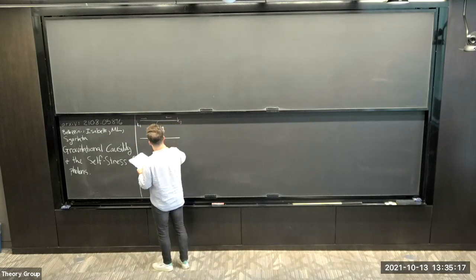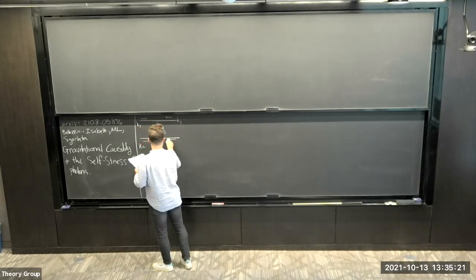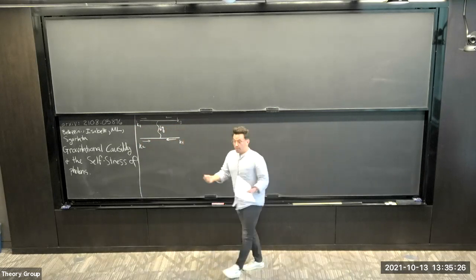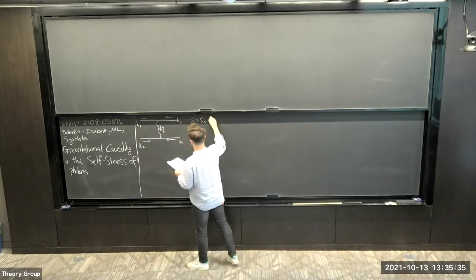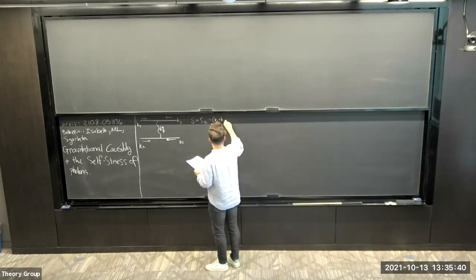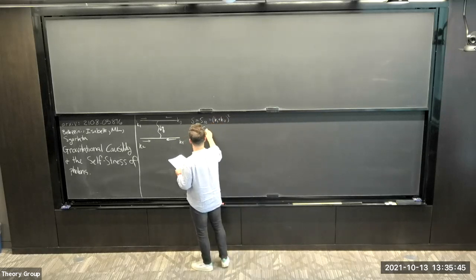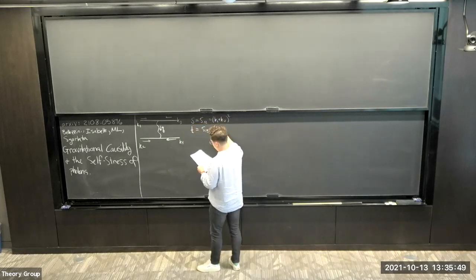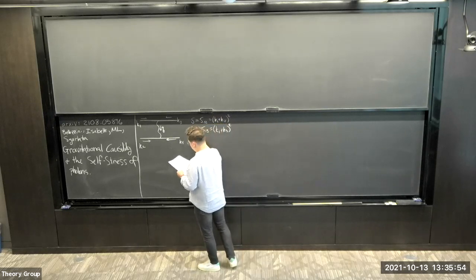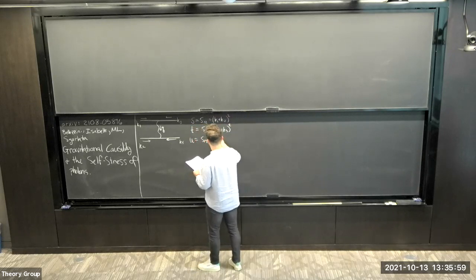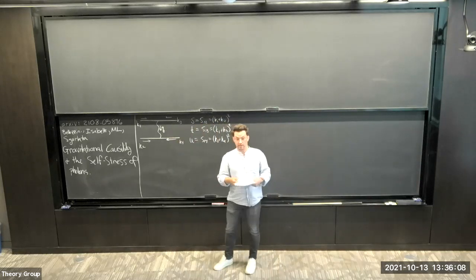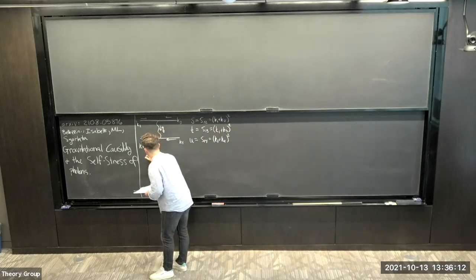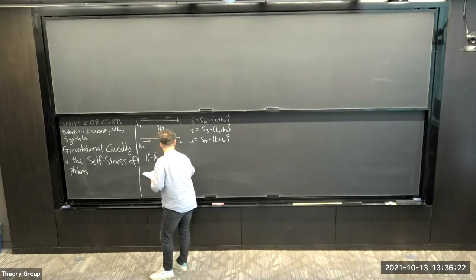I'm using incoming momenta. The scattering amplitude is a Lorentz invariant and it's a function of the Lorentz invariant Mandelstam variables, which are given in terms of these momenta. These are going to be massless external states, so these momenta are all null. S, T, and U are the typical Mandelstam variables. This Q is the exchange momentum, which will be important in some of the calculations we're doing.